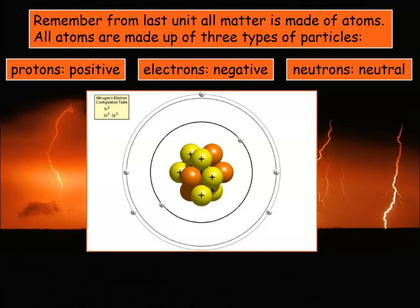What we know from the past — hopefully you remember this from your review of chemistry — is that protons are positive, electrons are negative, and neutrons are neutral. We have these protons and neutrons that make up the nucleus; they're much, much larger than the electrons, and the electrons orbit in these orbitals around the nucleus.